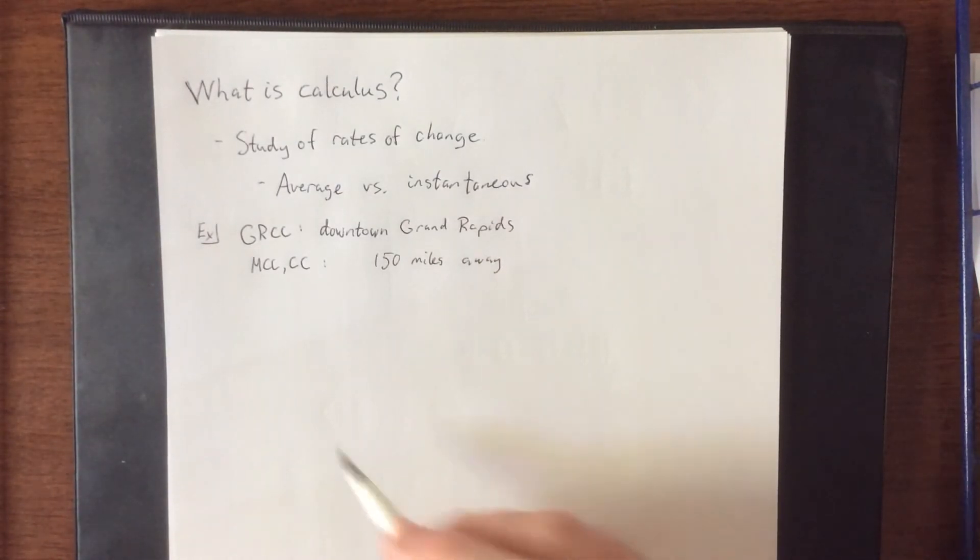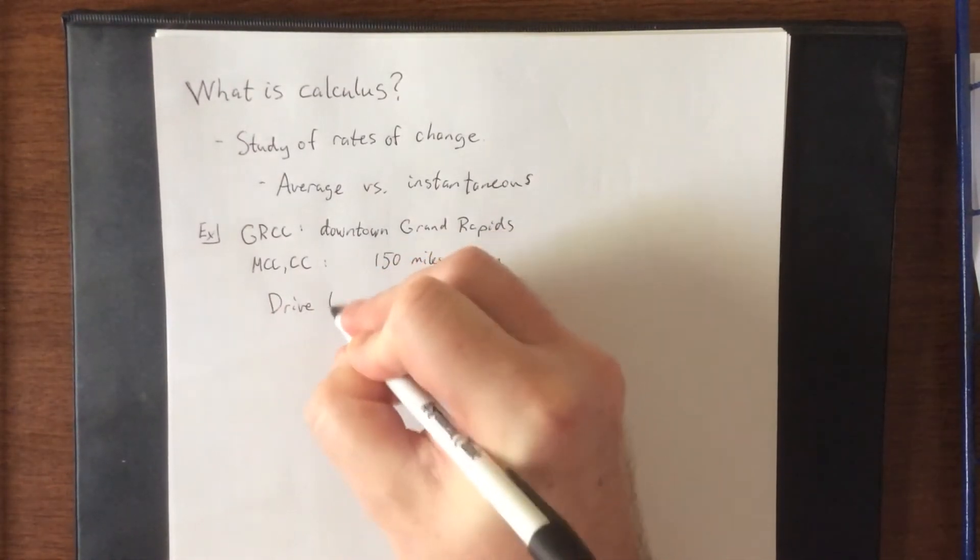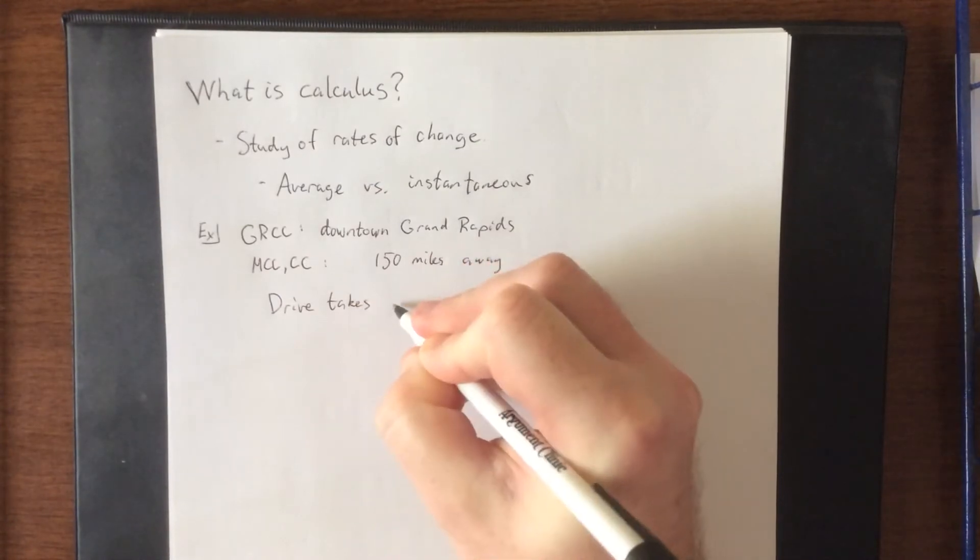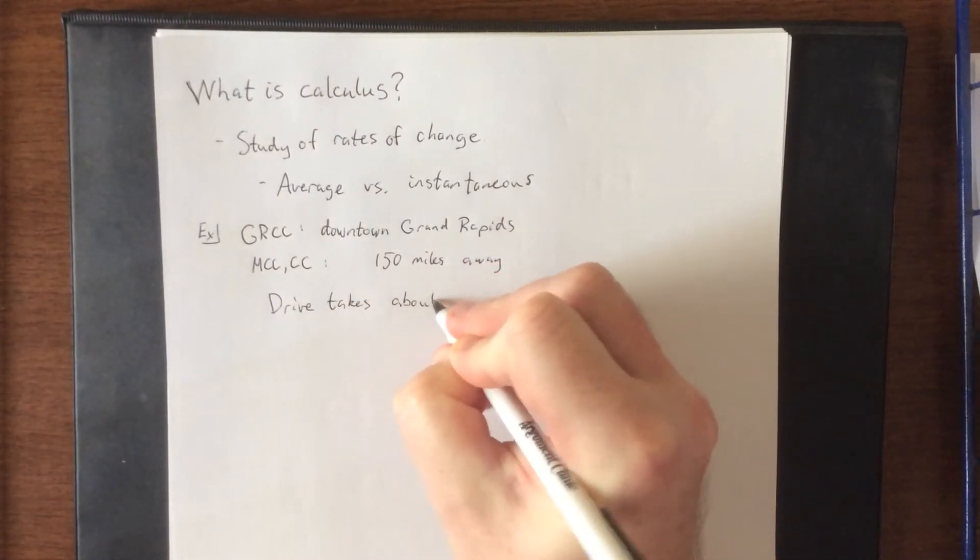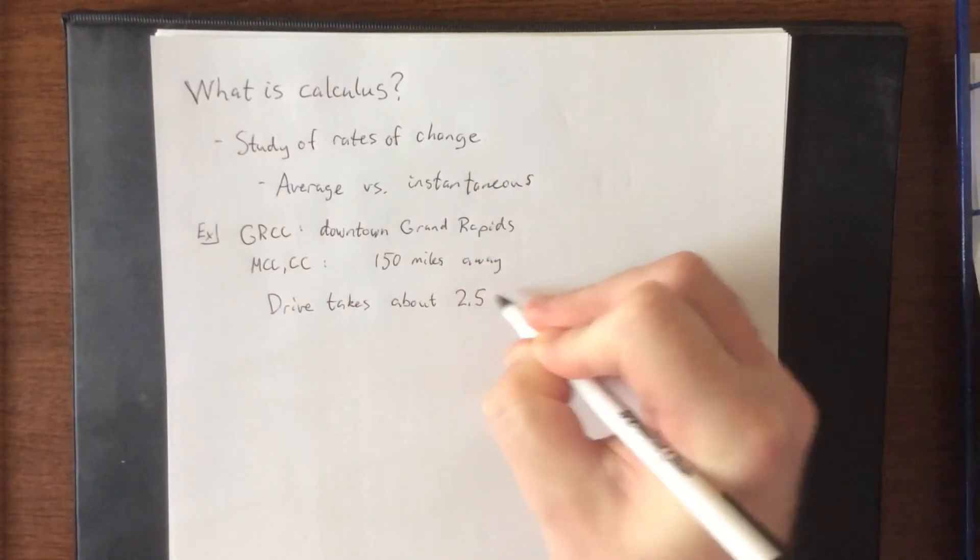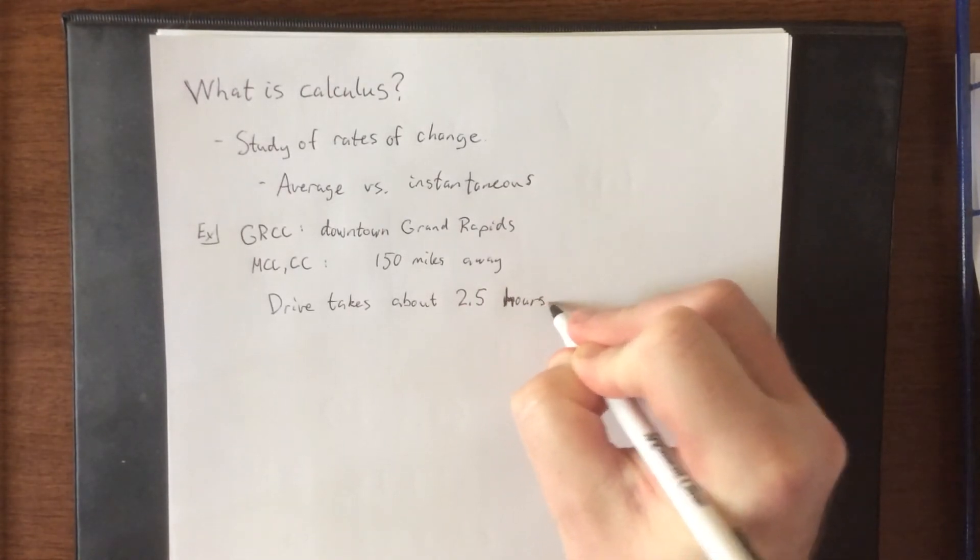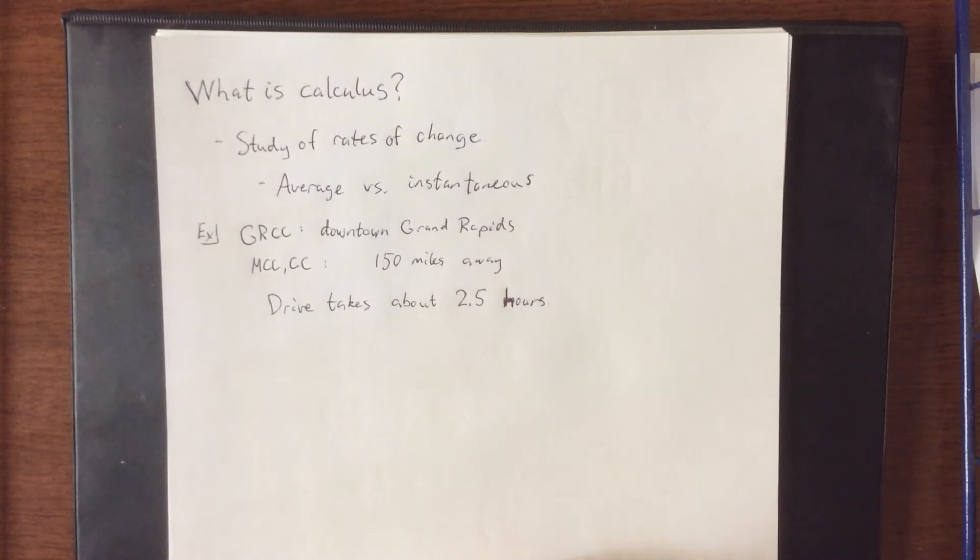Now, I've driven it before. I have driven between Grand Rapids and Macomb Community College, and the drive takes two hours. I'm going to say about 2 hours and 30 minutes. So for the time being, we'll just say 2.5 hours.